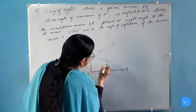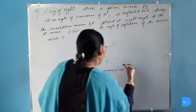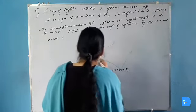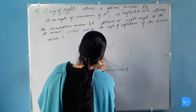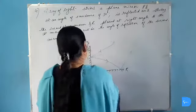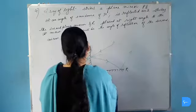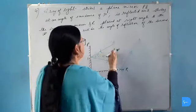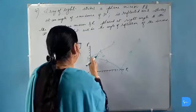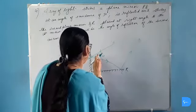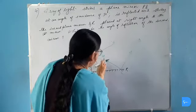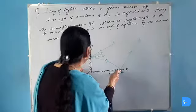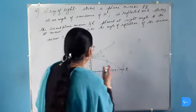It reflects and strikes the second mirror QR and then is again reflected away from the mirror. This angle is given. If we draw normal then we find that this angle is 30 degrees angle of incidence. The ray of light is striking this mirror PQ and is reflected making an angle of incidence of 30 degrees, and it reflects and strikes the second plane mirror which is placed at right angle to the mirror PQ, then it again reflects and goes away.